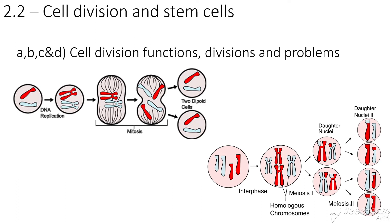Hi guys and welcome back to Ms. Clark Does Science. Today we're moving on to the second topic of the Year 11 WJEC biology spec, which is cell division and stem cells. In this video today we're going to be discussing the first four spec points because they all revolve around cell division — which is mitosis and meiosis — their functions, what divisions are happening, and the problems that can happen.